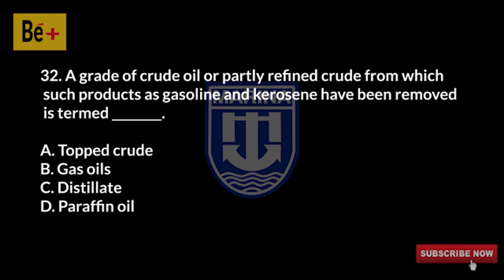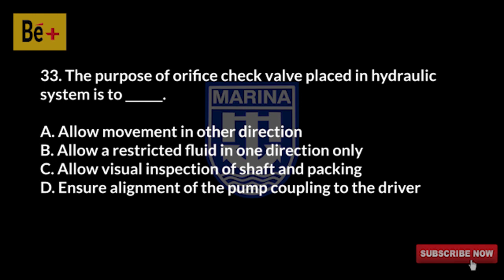A grade of crude oil or partly refined crude from which products such as gasoline and kerosene have been removed is termed: A) top crude, B) gas oils, C) distillate, D) paraffin oil. The answer is A, top crude.